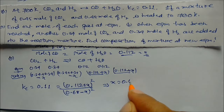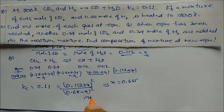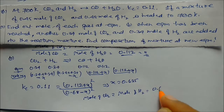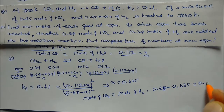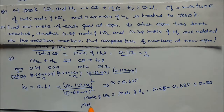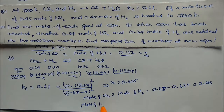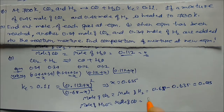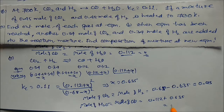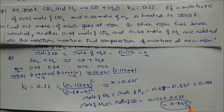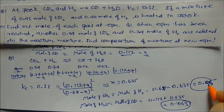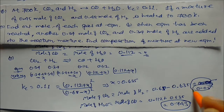Moles of CO₂ = moles of H₂ = 0.68 − 0.635 = 0.05 mol. Moles of H₂O = moles of CO = 0.112 + 0.635 = 0.743 mol. These are our answers.